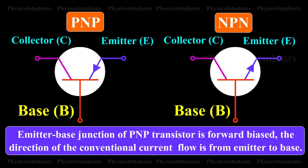When the emitter base junction of a PNP transistor is forward biased, the direction of the conventional current flow is from emitter to base.